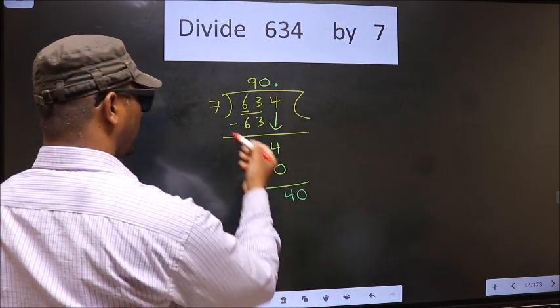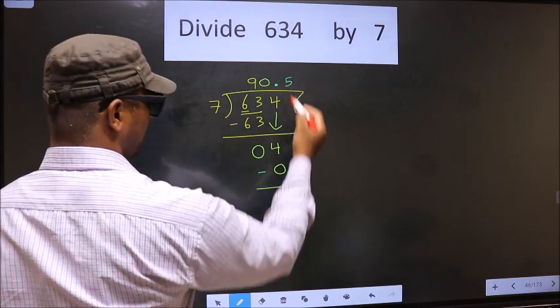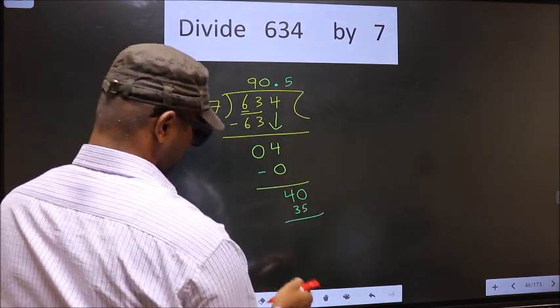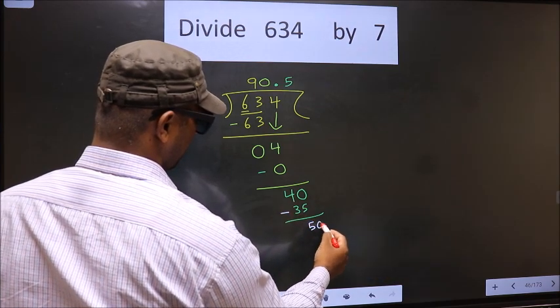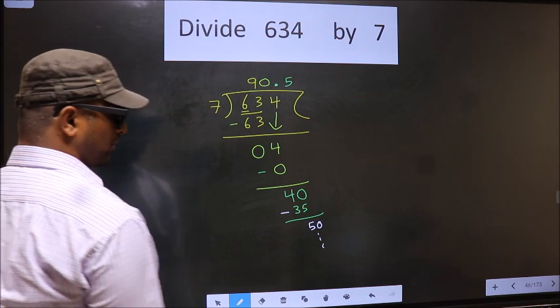A number close to 40 in 7 table is 7 times 5 is 35. Now you subtract. 40 minus 35 is 5. Take 0. Continue the division. I am not doing that.